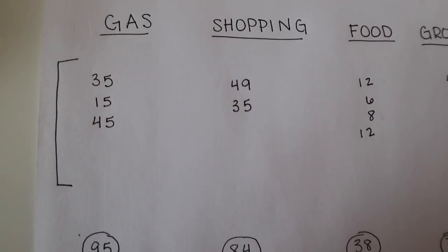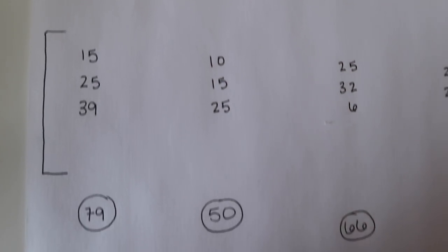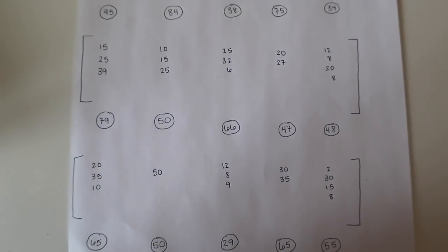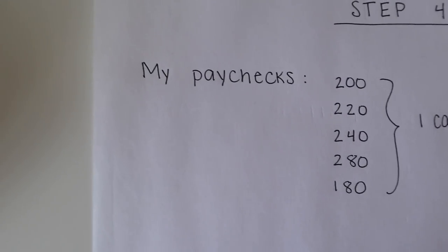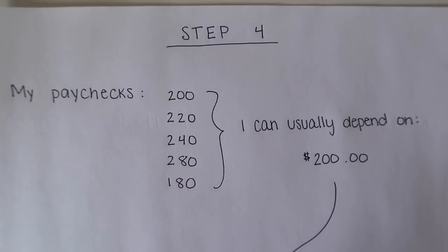Once you have a total for each of the three individual months, keep the numbers broken down so you can see where they came from — for example, $200 three months ago, $100 two months ago, $150 this month — then total the bottom. Now figure out how much you regularly get paid. If you're salaried, great. If you're hourly and it fluctuates, determine the amount you can always count on — if you typically make between $180 and $280, you can reliably bank on $200 per paycheck.